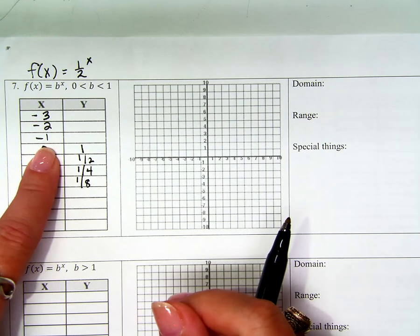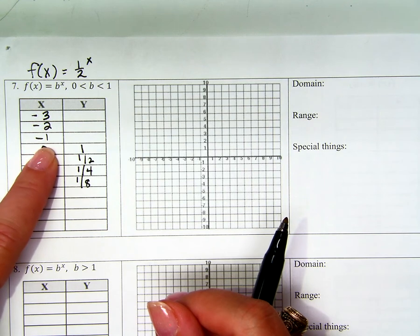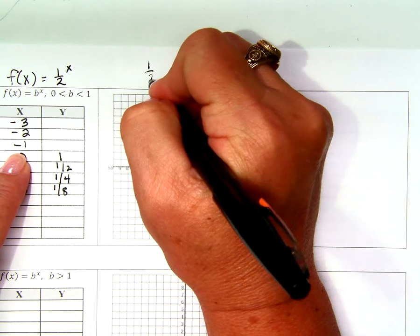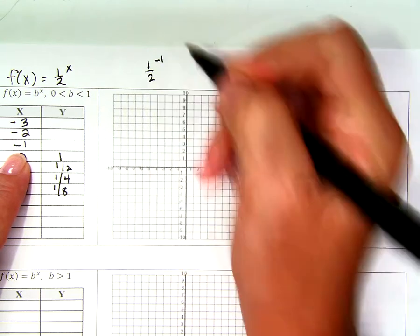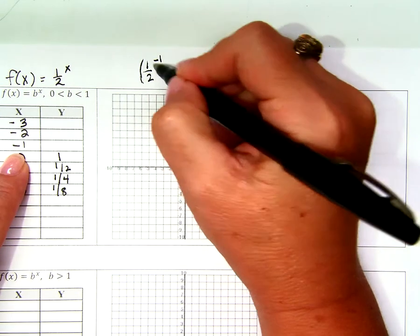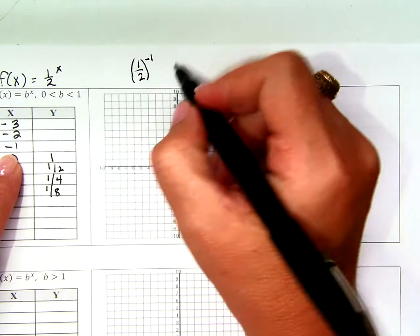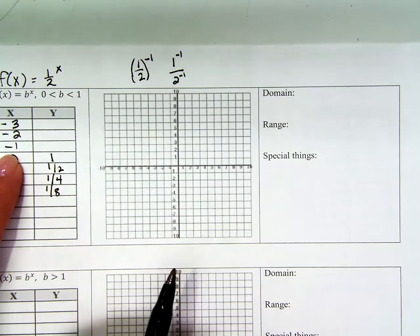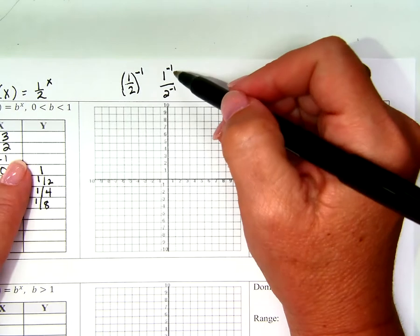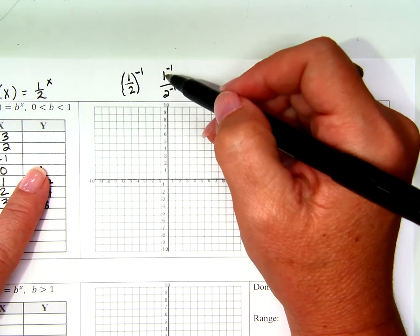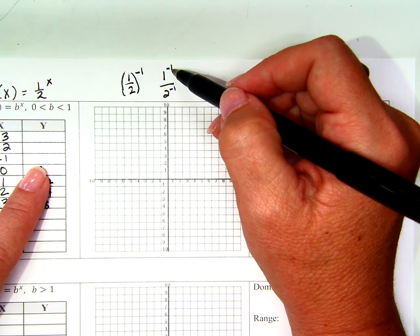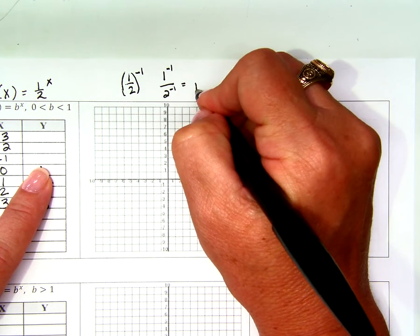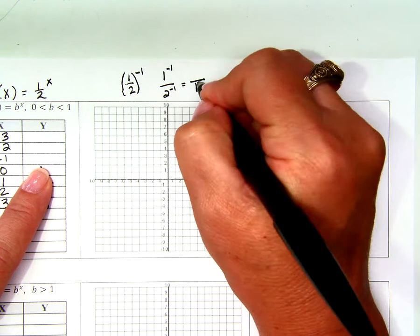What about negatives though? Here's what happens. 1 half to the negative 1 power, that whole fraction is to the negative 1 power. So it's 1 to the negative 1 power over 2 to the negative 1 power. Things to the negative power do not want to be where they are. The 1 is in the numerator, it does not want to be in the numerator, it wants to be in the denominator. When I move it to the denominator, the exponent is not negative anymore.